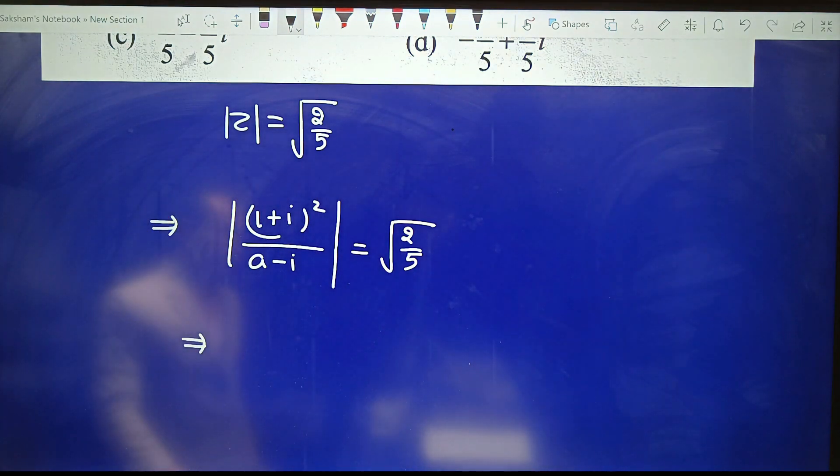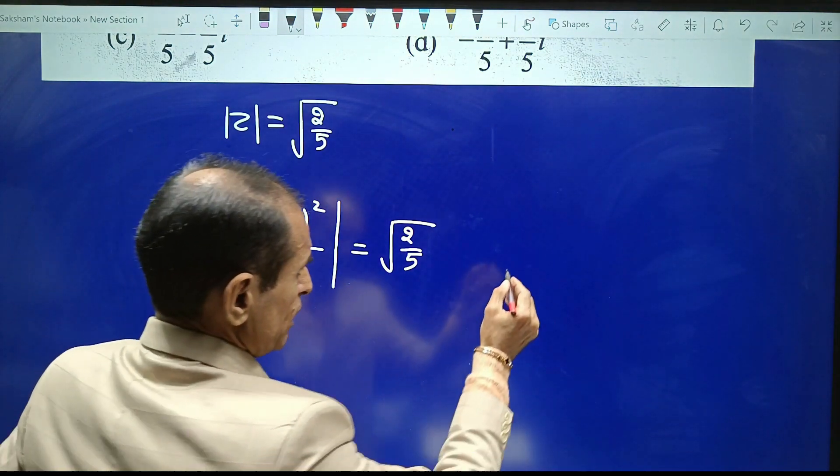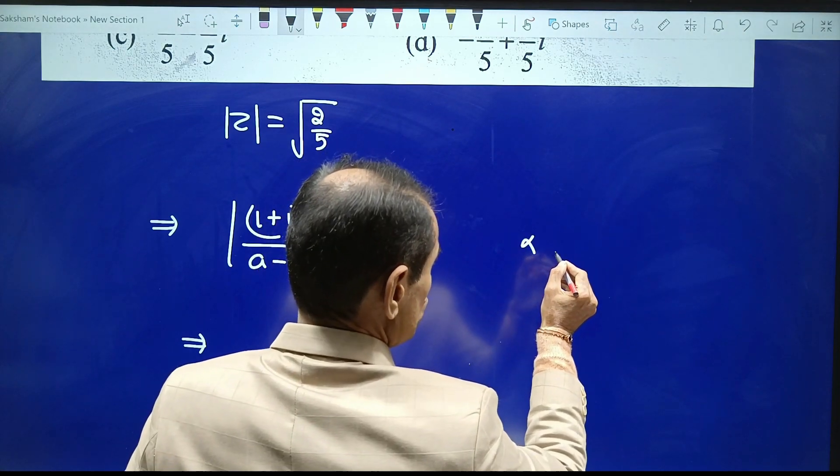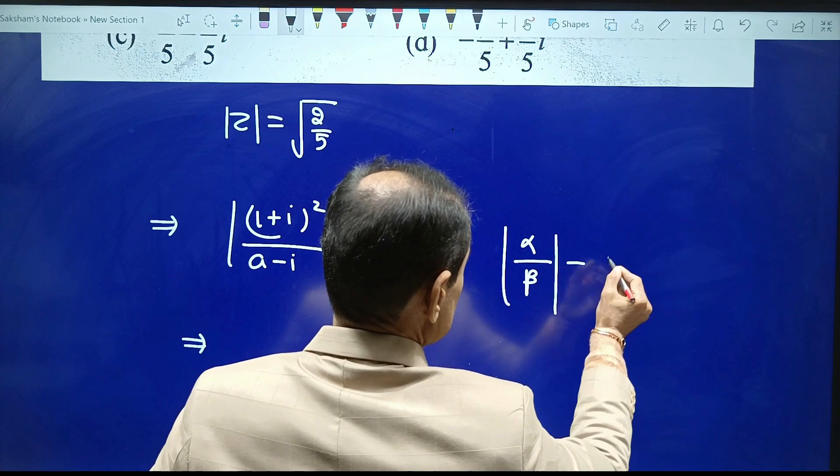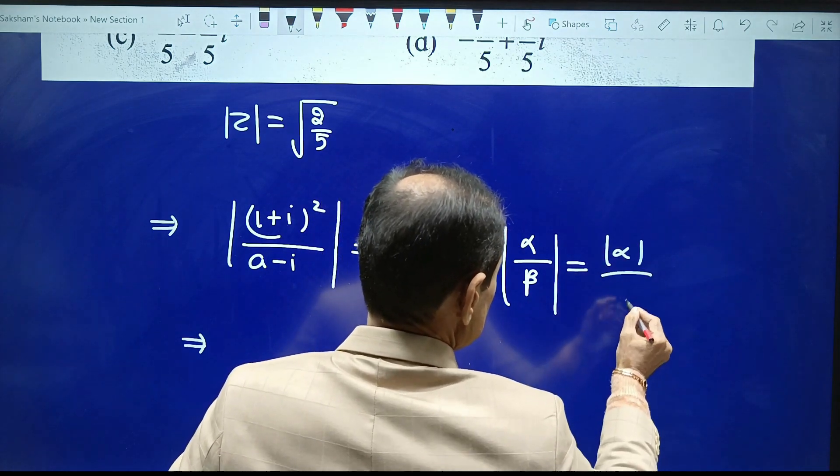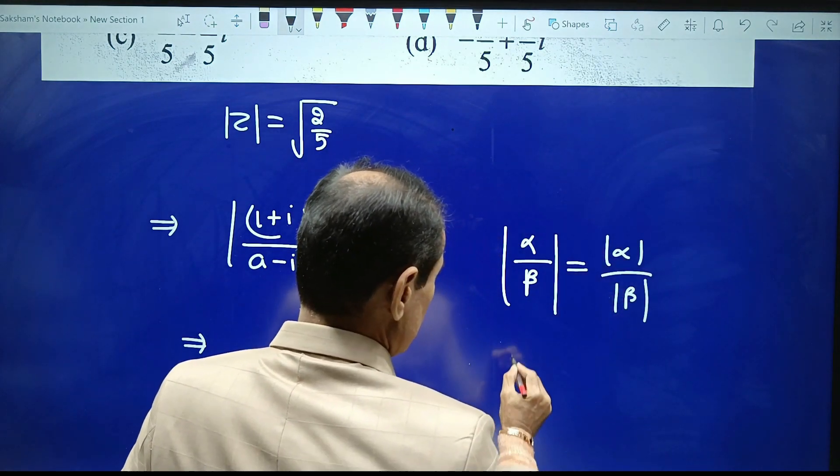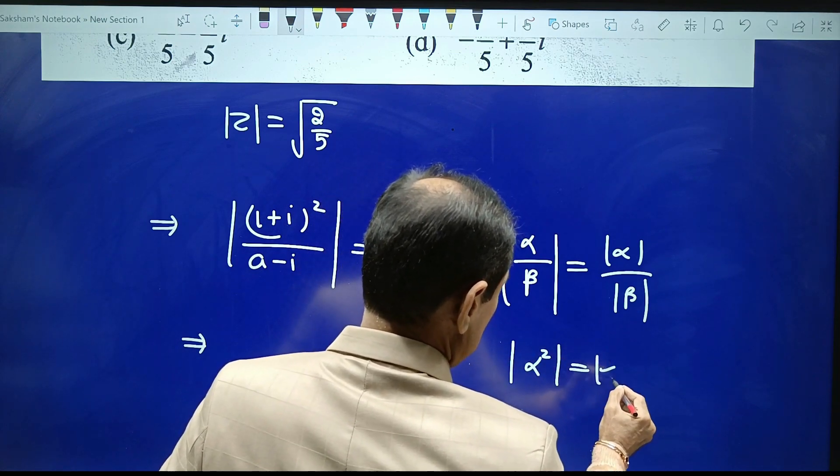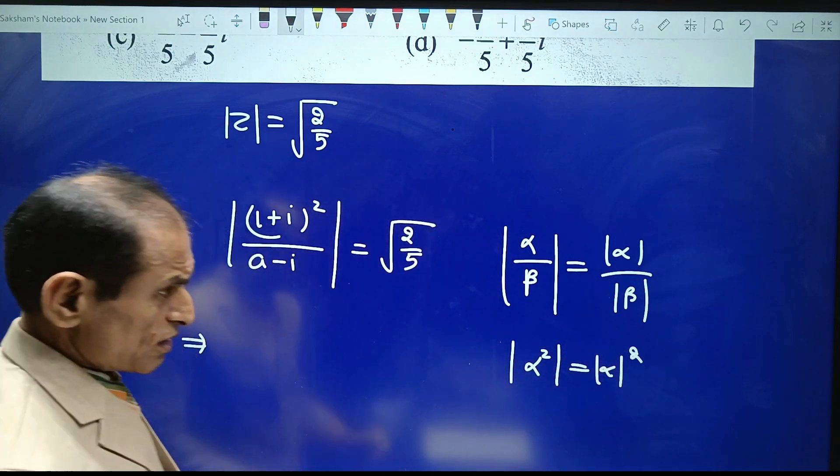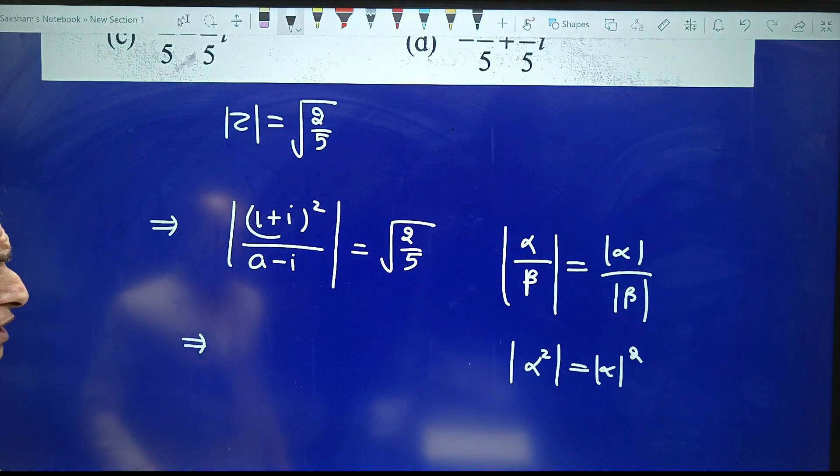We know two formulas: if α and β are complex numbers, then |α/β| = |α|/|β|, and |α²| = |α|². Keeping these formulas in mind,